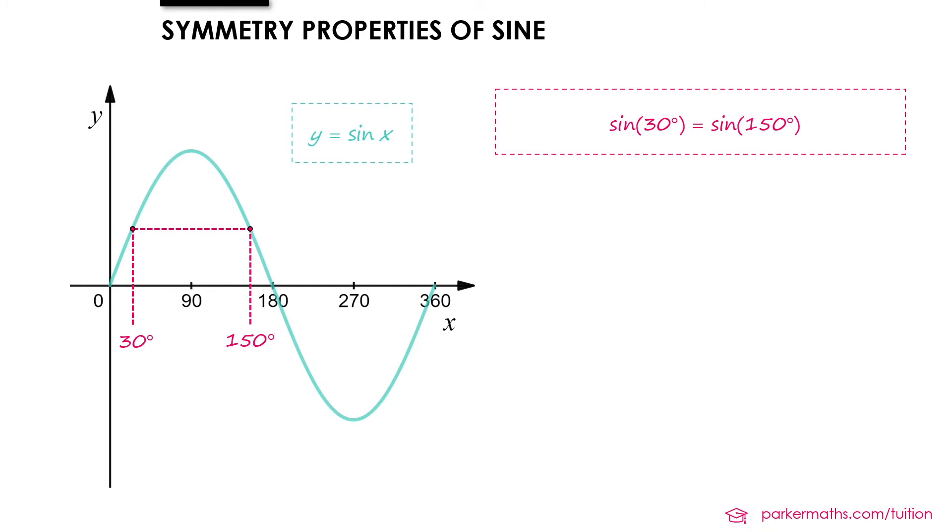But let's think more generally about this. Instead of having 30 and 150, let's imagine our first value was theta. And then think how would we get our second value? Well the distance between 0 and our value theta is the same as the distance between 180 and our other value if we're tracking backwards.